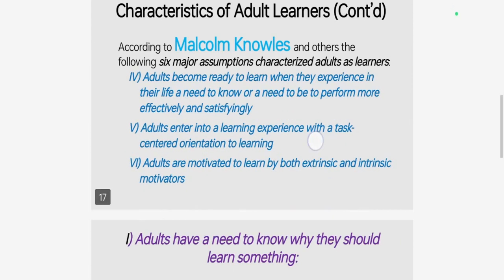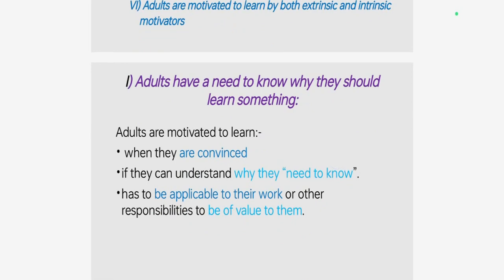We are also going to see how we take into consideration these characteristics during planning and implementing adult learning programs. The first characteristic of adult learning is adults have a need to know why they should learn something. This means adults are motivated to learn when they are convinced that learning the new knowledge, attitude or skills is important. Learning is a more meaningful experience for adults if they can understand why they need to know.